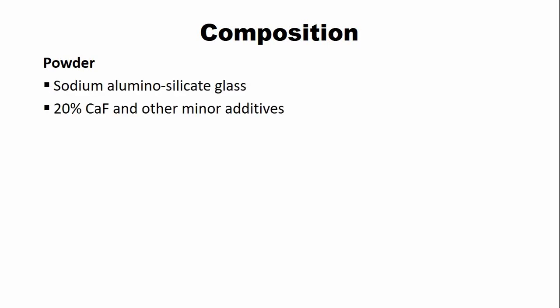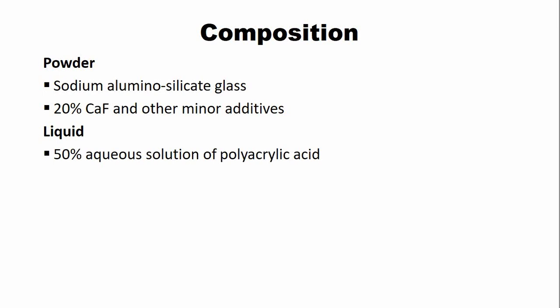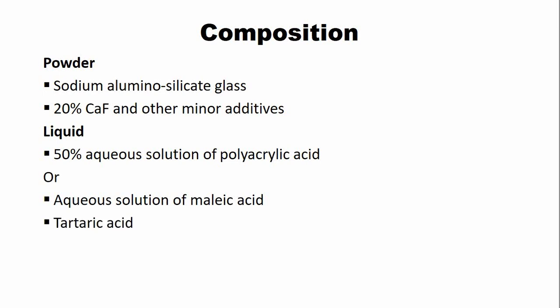The composition of the glass ionomer cement: the powder mainly comprises sodium aluminum silicate glass, along with 20% calcium chloride and other minor additives. The liquid comprises an aqueous solution of polyacrylic acid or aqueous solution of malic acid. In addition, the liquid also contains tartaric acid, which is present to control the setting reaction of the cement.